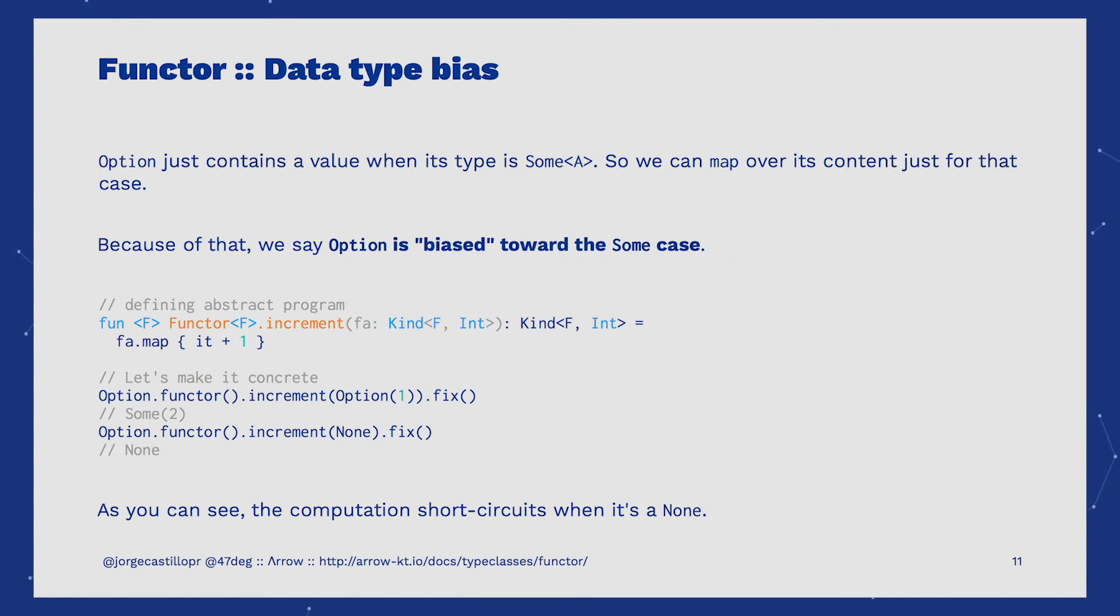As you can see on this snippet, we can call the increment method for both implementations, Some and None. The difference is that it will only work when it's a Some. Whenever we try to map over a None, we'll get a None as a result. So if we look at Option None as a way to express an error representing the absence of a value, any mapping computations built over it will be short-circuiting the error and keep returning None.